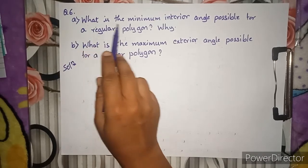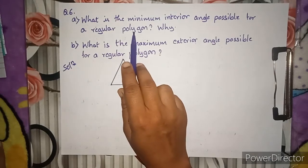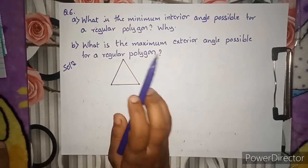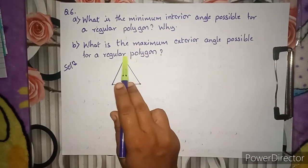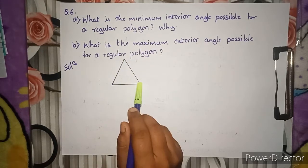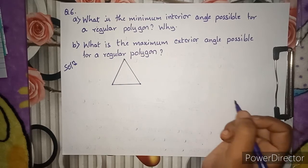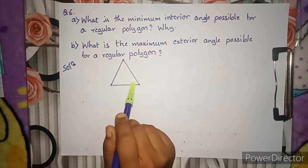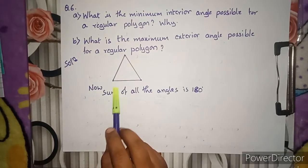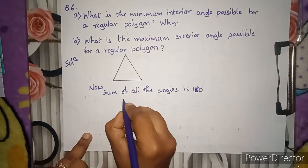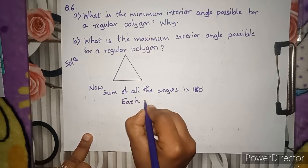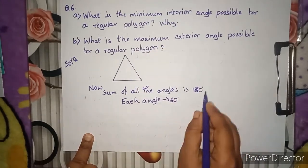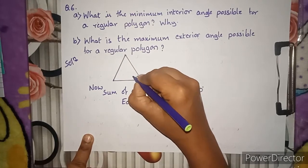Question number 6, part A: What is the minimum interior angle possible for a regular polygon, and why? The minimum regular polygon we can draw is an equilateral triangle. The sum of all angles is 180 degrees, so each angle becomes 180 divided by 3, which equals 60 degrees.